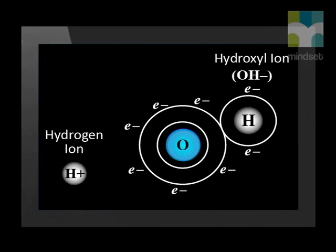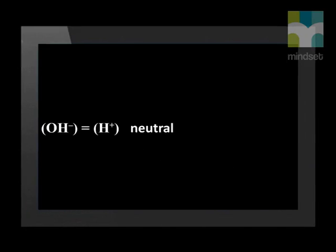In an aqueous solution, the concentration of hydroxyl ions and hydrogen ions determines whether the solution is acidic or basic. The hydroxyl ion is the OH- ion. If the concentration of hydroxyl ions is equal to the concentration of hydrogen ions, then the solution is neutral — in other words, neither acidic nor basic.